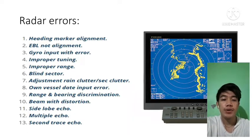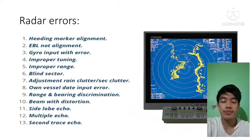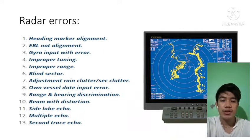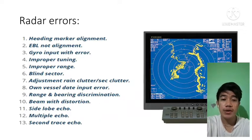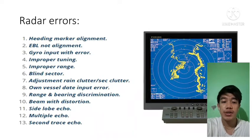Improper tuning of the radar also causes error. Improper range also causes error in the radar. Next is blind sectors — areas that cannot be scanned by the radar of the vessel because they are shielded by elements of its superstructures, mast, etc.